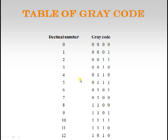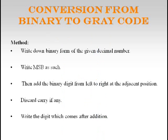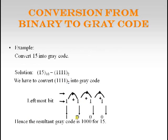Now let us see how to convert a given binary into Gray code. Write down the binary, write the MSB as-is, then add adjacent bits from left to right, discarding any carry and writing only the result. For example, decimal 15 in binary: write the MSB as-is, then 1+1=0 carry 1; carry + next bit 1+1=0 carry 1; again 0+1=1 carry 0; discard carry. The resultant Gray code for 15 is 1000.